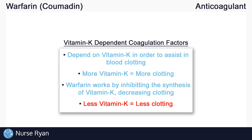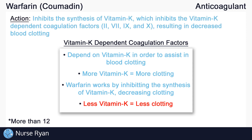To be a bit more specific, there are actually 12 different coagulation factors in the body, and the vitamin K dependent coagulation factors are numbers 2, 7, 9, and 10. And just to reiterate, warfarin inhibits these coagulation factors.